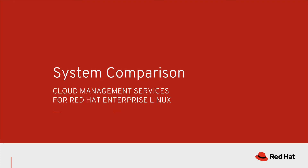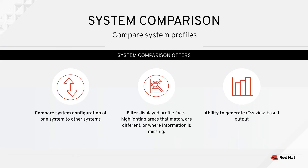System Comparison is one of the services included in Cloud Management Services for Red Hat Enterprise Linux. System Comparison enables you to compare system configuration of one host to other hosts in your environment. When comparing across different systems, you can filter the display by profile facts, highlighting areas that match, are different, or where information is missing. You can also generate CSV output of the systems that you are comparing.